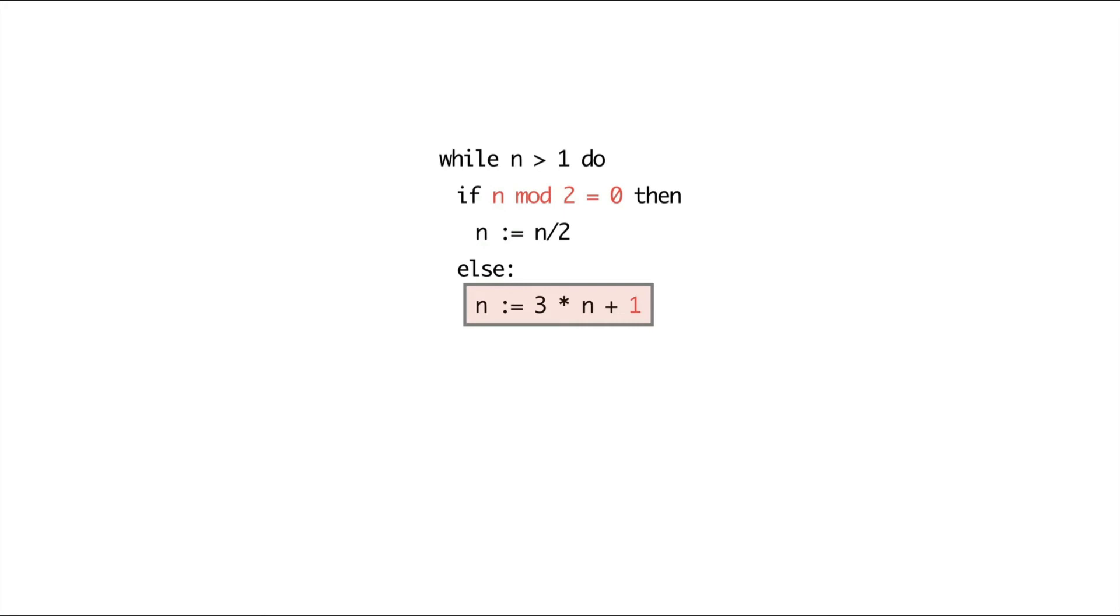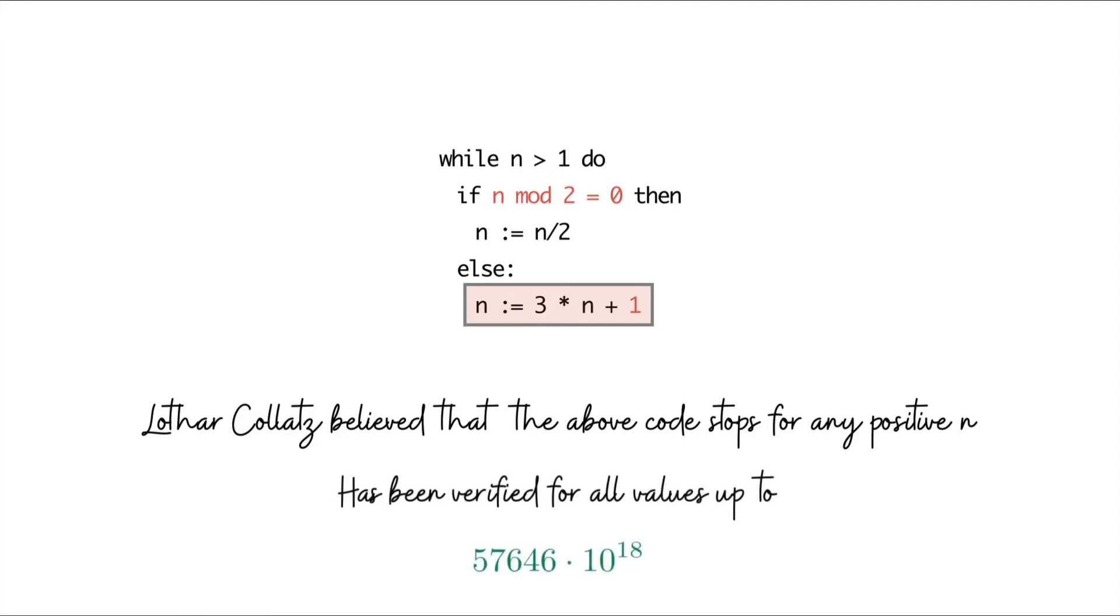Instead of a plus three in the else statement, we have a plus one—that's it, that's the only difference. But it turns out that it massively changes the nature of the problem. The mathematician Lothar Collatz believed that this code stops for any value of n. As of now, nobody really knows if this is true. People have tried this computationally, and it's been verified that the program terminates for some fairly large values of n, but we don't know if this is the case for every n or not. This is a fascinating conjecture with a lot of history. If you're interested, do look up the Collatz conjecture—it'll be a very interesting rabbit hole to explore.